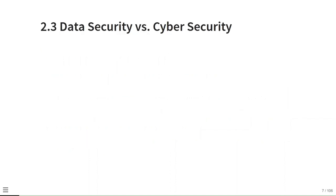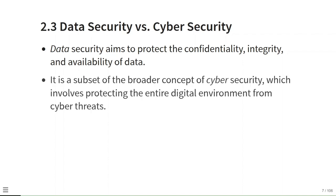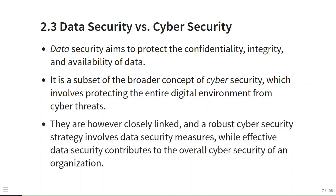Data security versus cyber security: data security aims to protect the confidentiality, integrity and availability of data. It is a subset of the broader concept of cyber security, which involves protecting the entire digital environment from cyber threats. They are closely linked — a robust cyber security strategy involves data security measures, while effective data security contributes to the overall cyber security of an organization.